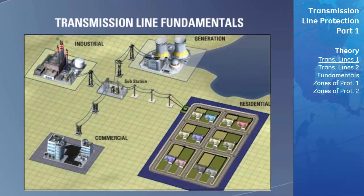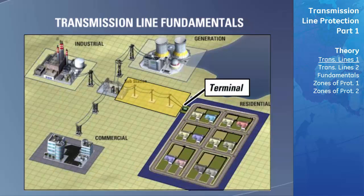In a power system, the area that constitutes a transmission line is defined by well-defined boundaries. This physical location of a line boundary is often called a terminal. The terminal can be a switch, a breaker, a bus, or a transformer.